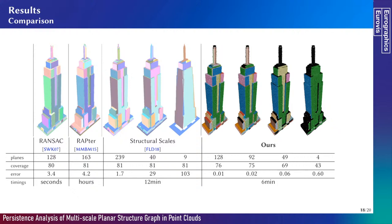We did a comparison with RANSAC and RAPTOR, which detect planes at a single scale, and with the structural scale technique that produces planes at three scales. We selected four of our segmentations using thresholds on scale. We obtained as many planes as RANSAC at our highest scale, and our lowest scale contains only the four main planes of the buildings. All other methods target 80% coverage, while our method lets the segmentation adapt to the shape itself. Since our final planes are unions of regions obtained using region growing, the root mean square error of the method is particularly low.